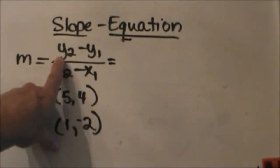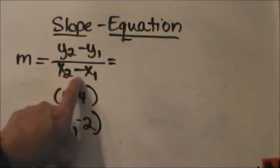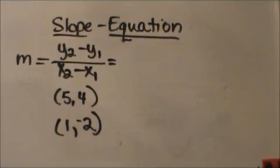We're going to take y2 minus y1 on the top of our fraction and x2 minus x1 on the bottom of our fraction.